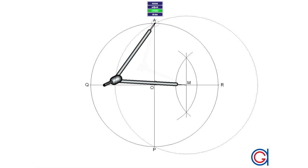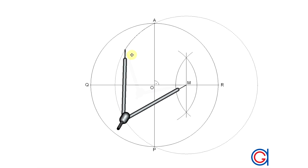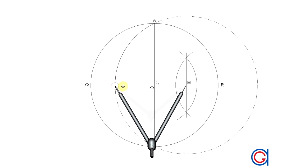So now, with our compass centered on M and radius MA, we scribe an arc to the left until it cuts our horizontal diameter QR. We will call this point S.